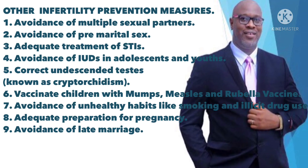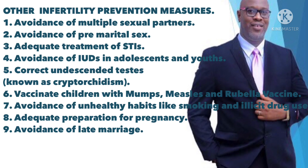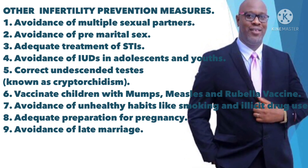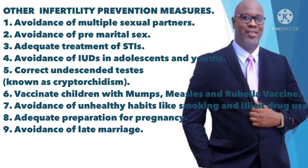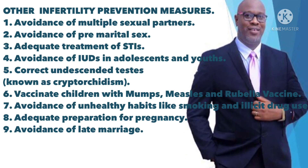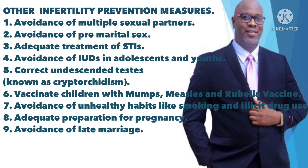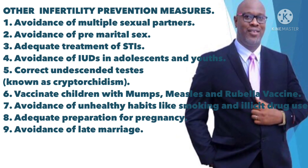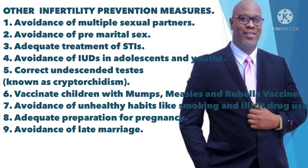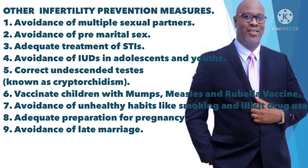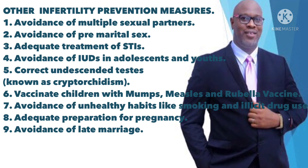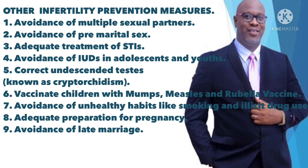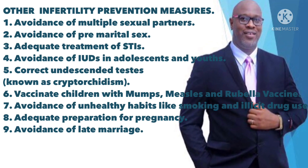6) Vaccinate children with mumps, measles and rubella (MMR) vaccine. These three can affect pregnancy. It is recommended that all women of childbearing age who do not have immunity to MMR should receive the vaccine before pregnancy. Mumps may cause sterility in males. 7) Avoidance of unhealthy habits like smoking and illicit drug use. 8) Adequate preparation for pregnancy by improving pregnancy knowledge and regular prenatal checks.